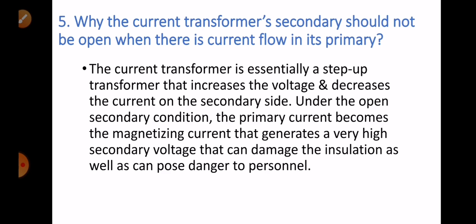The next question: why should the current transformer's secondary not be open when there is current flow in its primary? The current transformer is especially a step-up transformer that increases voltage and decreases current on the secondary side. Under open secondary conditions, the primary current becomes the magnetizing current, which generates a very high secondary voltage that can damage the insulation and cause danger to personnel. This is the reason the output of a current transformer is shorted, not kept open.